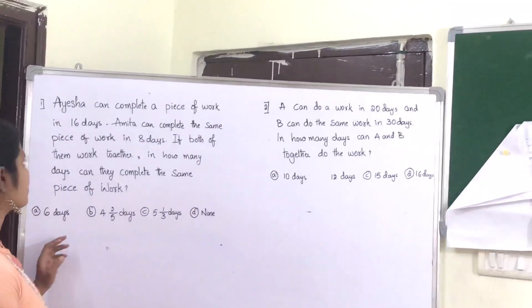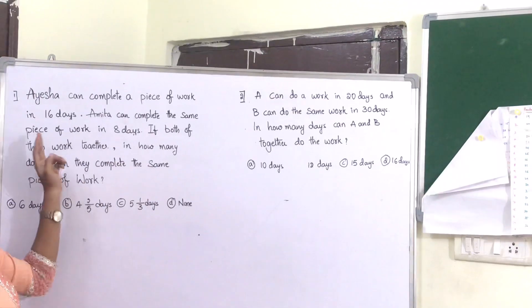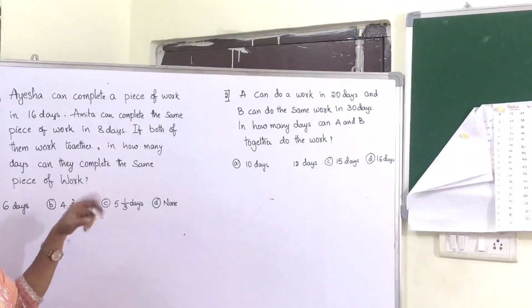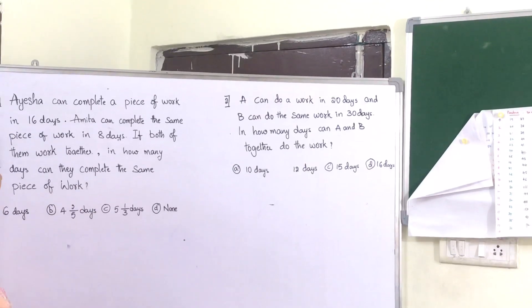Aisha can complete a piece of work in 16 days. Amita can complete the same piece of work in 8 days. If both of them work together, in how many days can they complete the same piece of work?